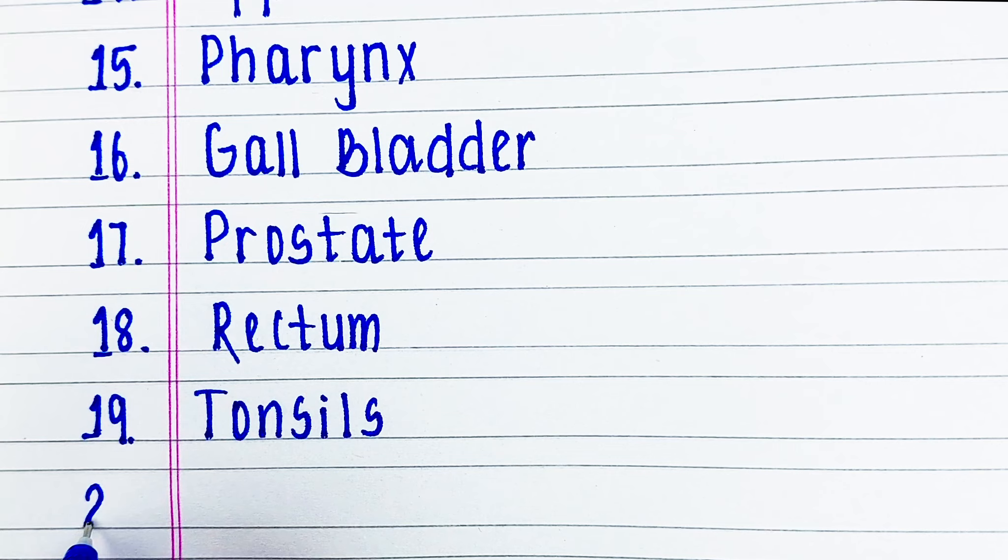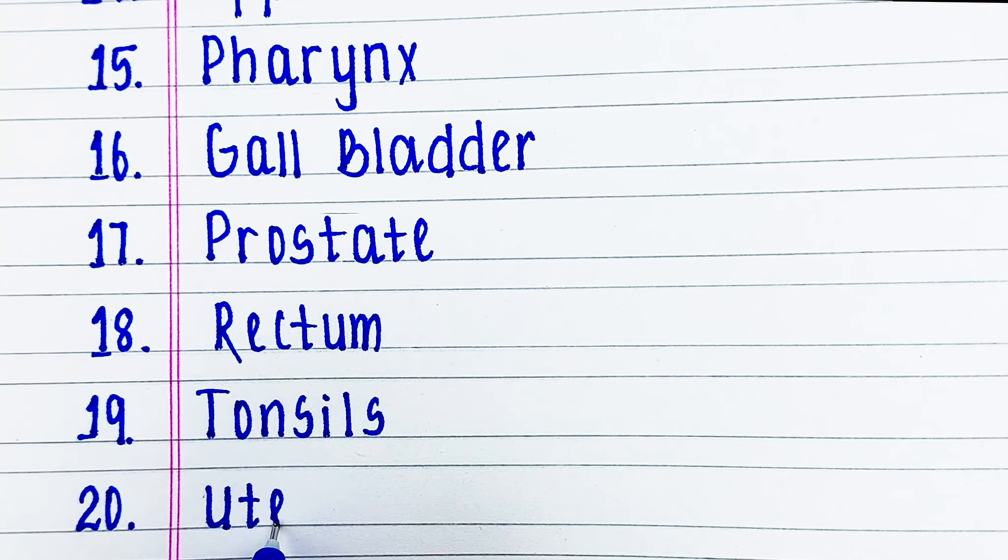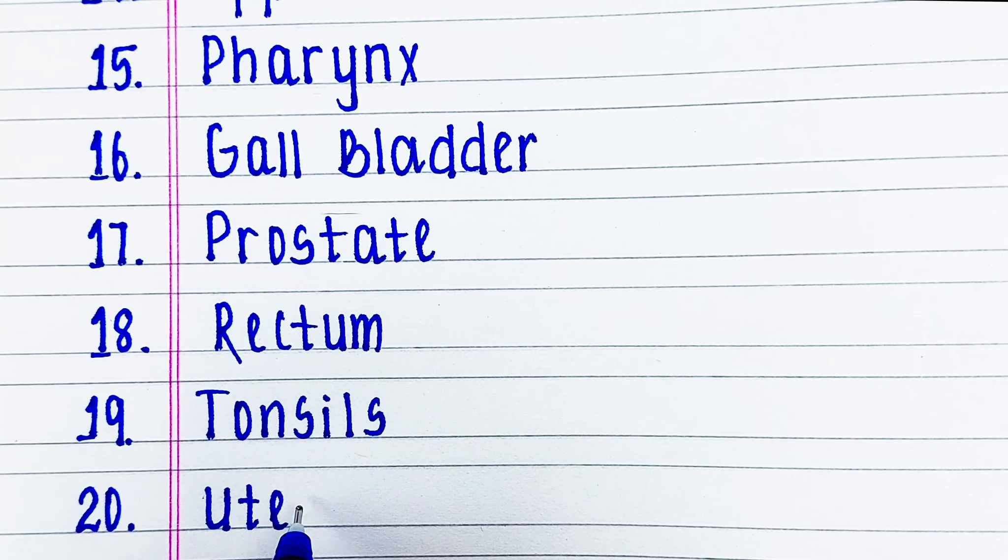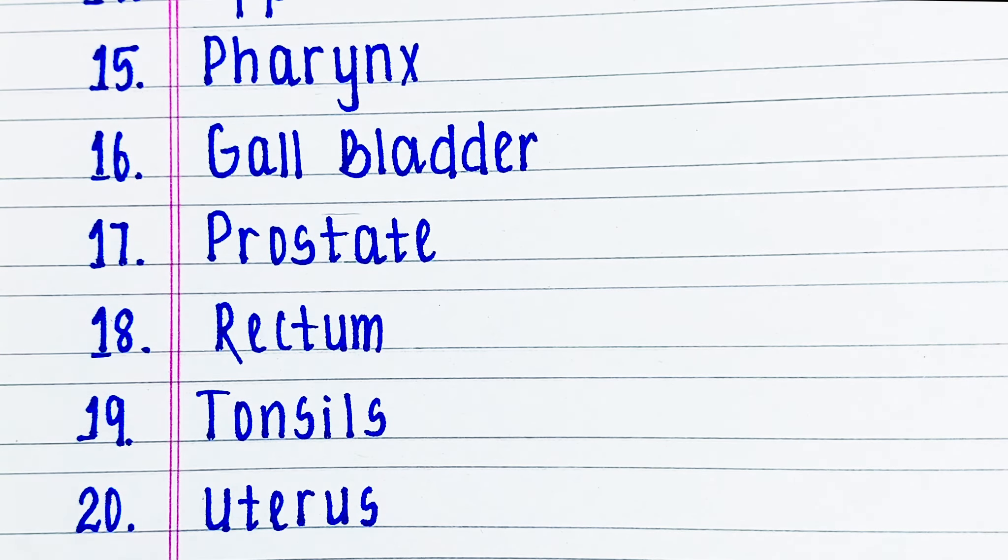Last one is uterus. This is an organ of female reproductive system. Its primary function is to nourish the developing fetus prior to birth.